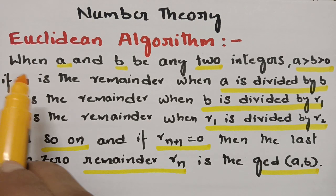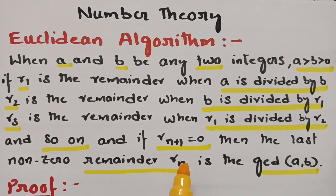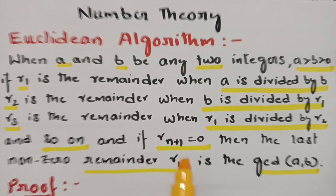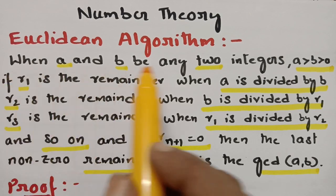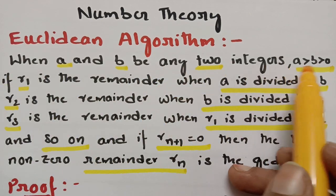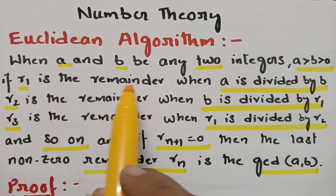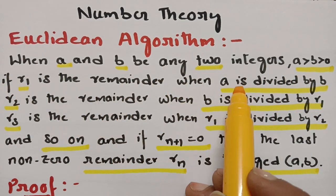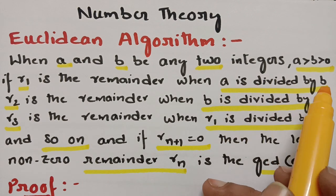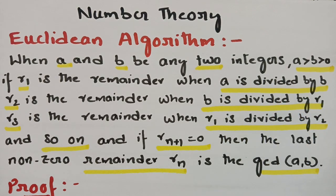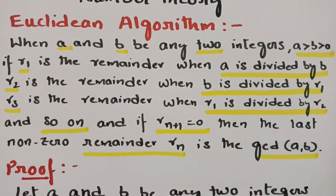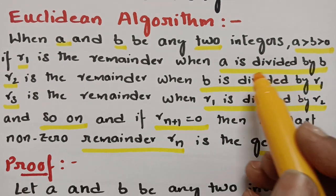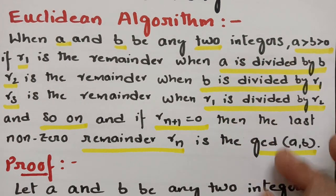So this is very simple. Let me tell you an example and explain, then this will be easy for you. When A and B are any two positive integers, R1 is the remainder when A is divided by B. Let's get started dividing A with B.